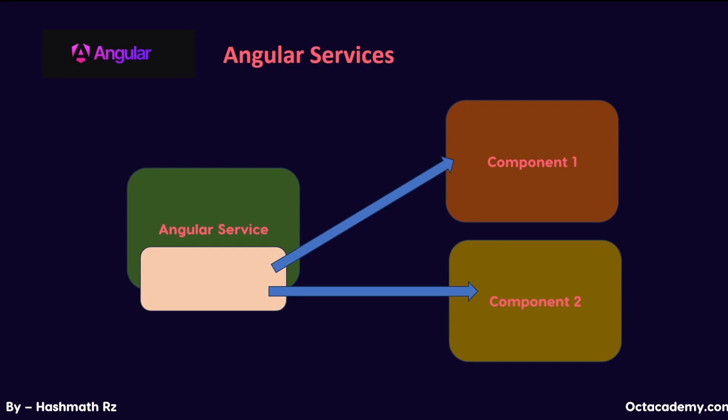It's not just about sharing data. Say you have two buttons in two unrelated components and both buttons need to perform the same logic when clicked. Instead of duplicating the same method in both components, you can create the onClick method in the Angular service, and then both components can access and execute this method through the service. This approach not only reduces code duplication but also saves time and effort, making your application more efficient and easier to maintain.